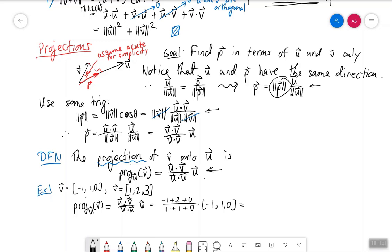Which is, let's see, this is going to be 1 over 2 times minus 1, 1, 0, which is a perfectly fine final answer. But if you want, you can bring the 1 half inside and write this as minus 1 half comma 1 half comma 0. Both of these would be perfectly acceptable final answers.